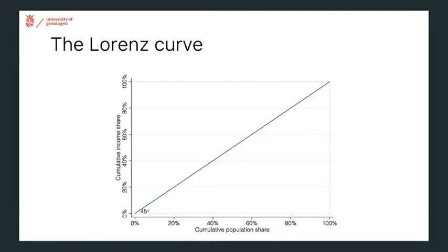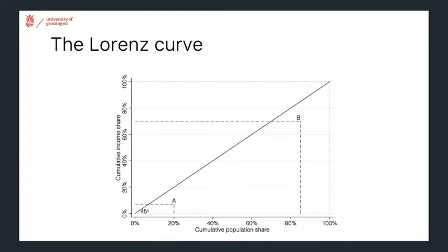One way to visualize the income distribution is through the Lorenz curve. It's important to note the axes: on the horizontal axis we have the cumulative population share, and on the vertical axis we have the cumulative income share. For example, if group A, all with the same income, makes up 20% of the population and earns about 7% of the income, that is one point on the curve.